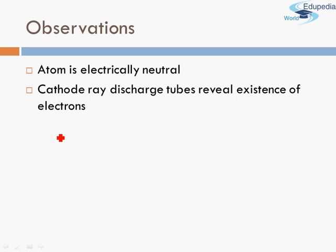But at the same time Thomson observed that there are something called electrons present. Based on his cathode ray discharge tube experiments he observed that there are negatively charged particles present in every atom in the world.